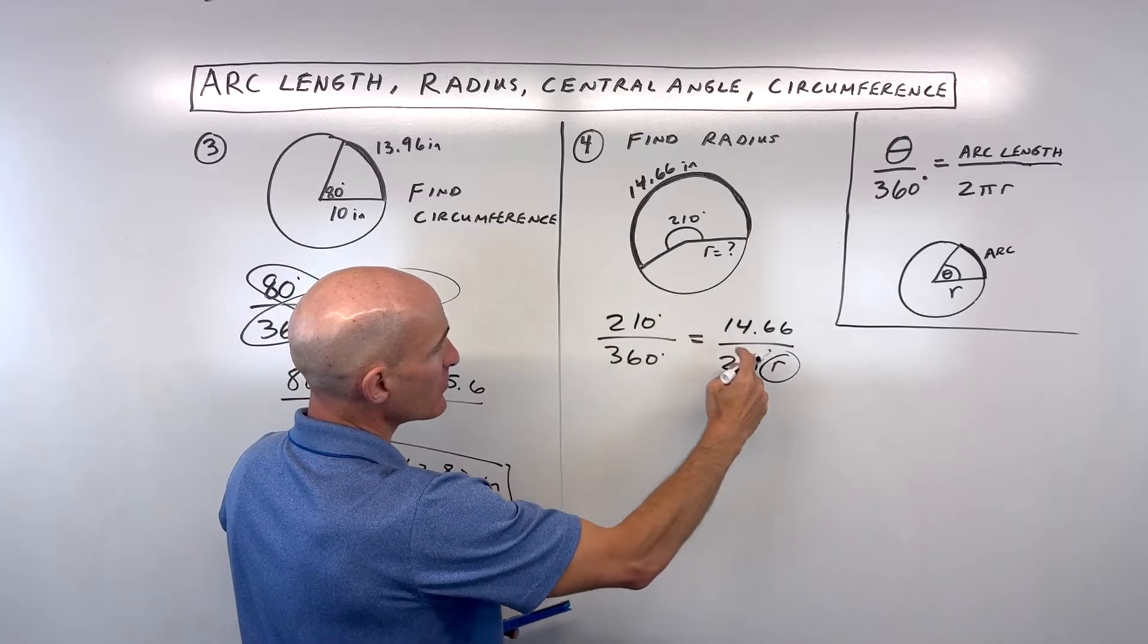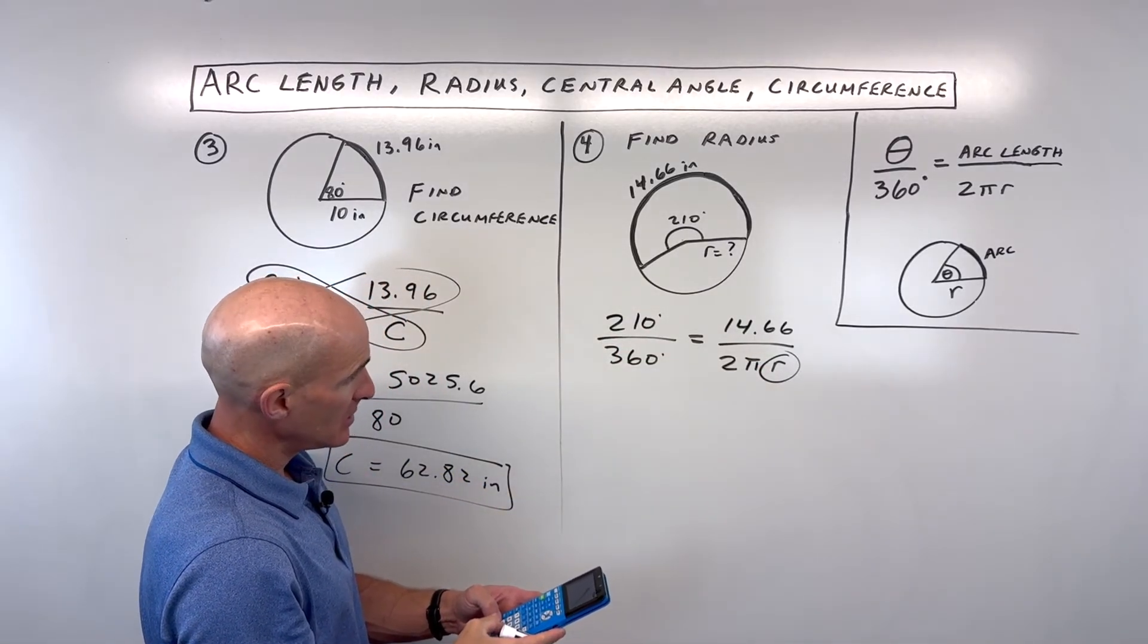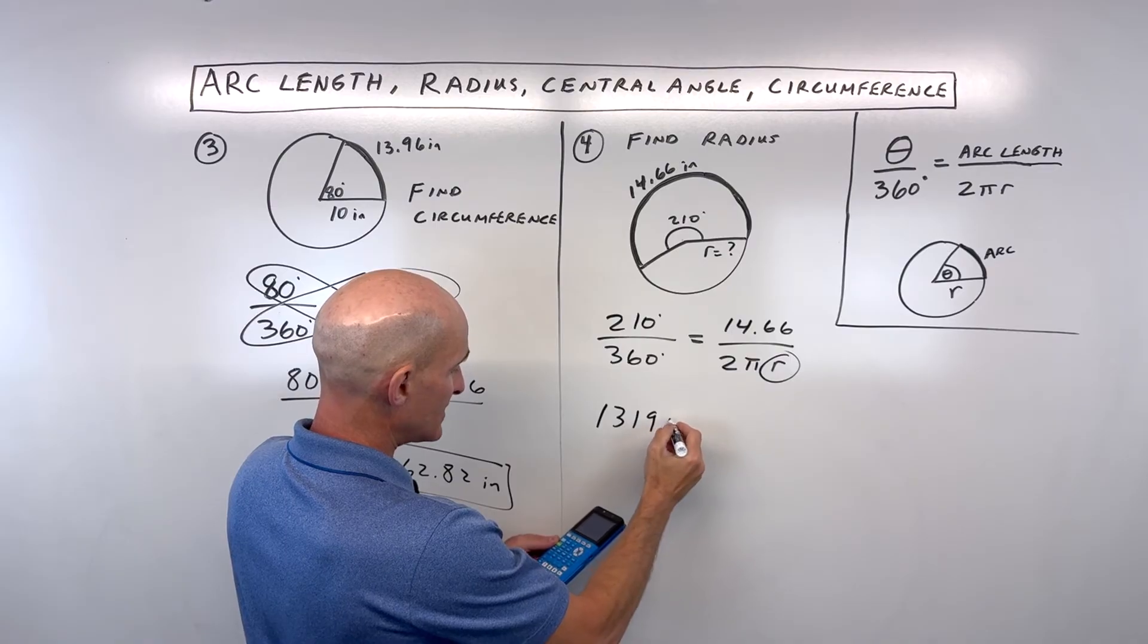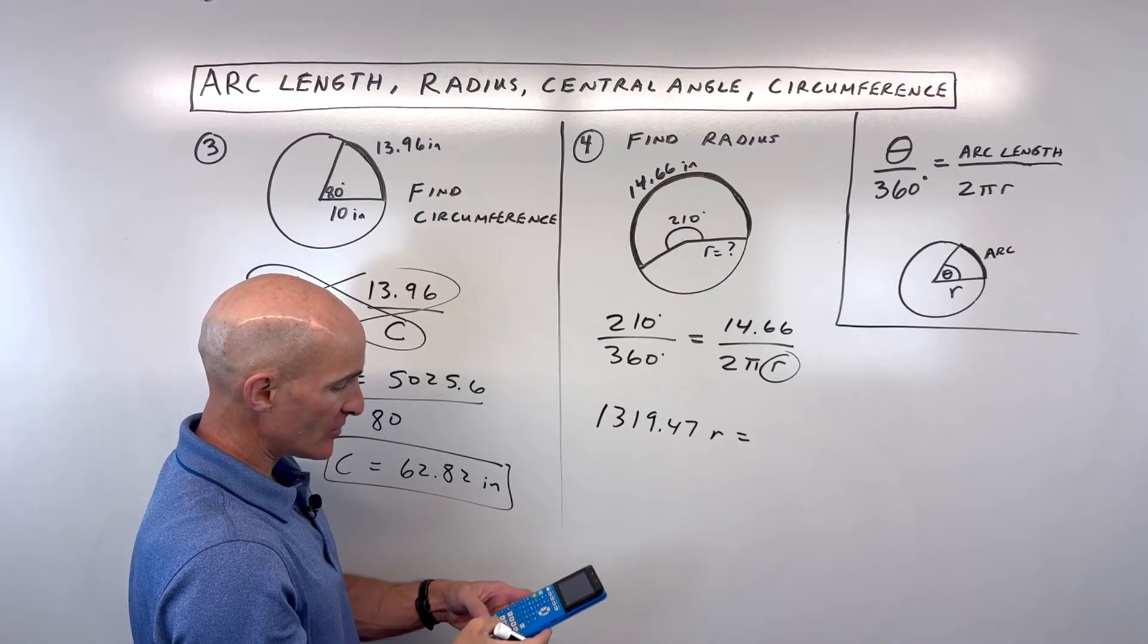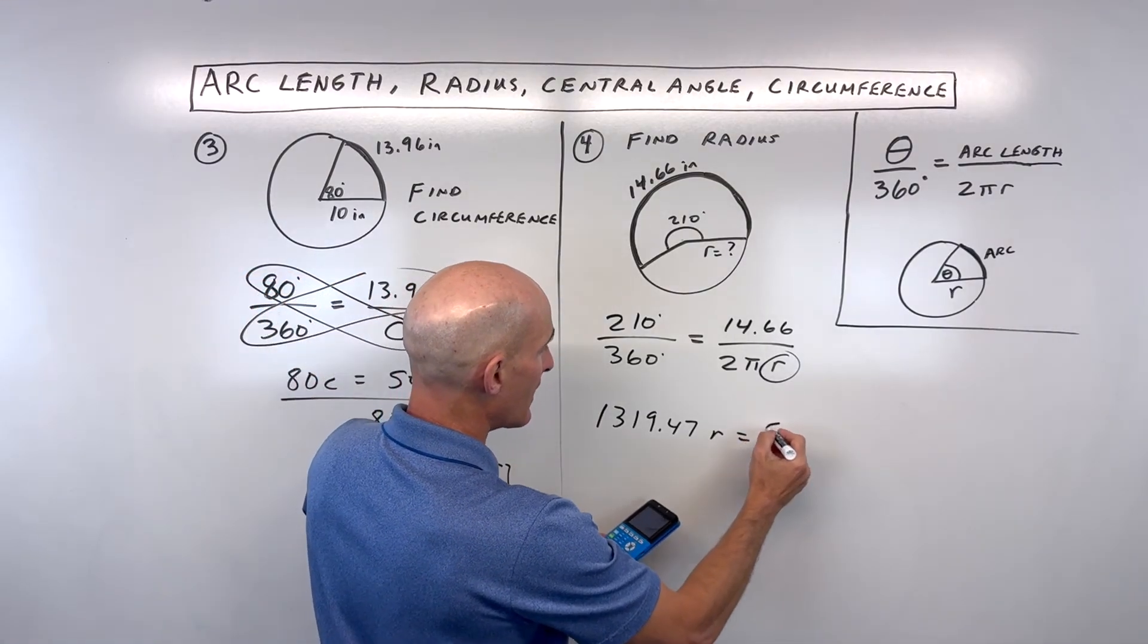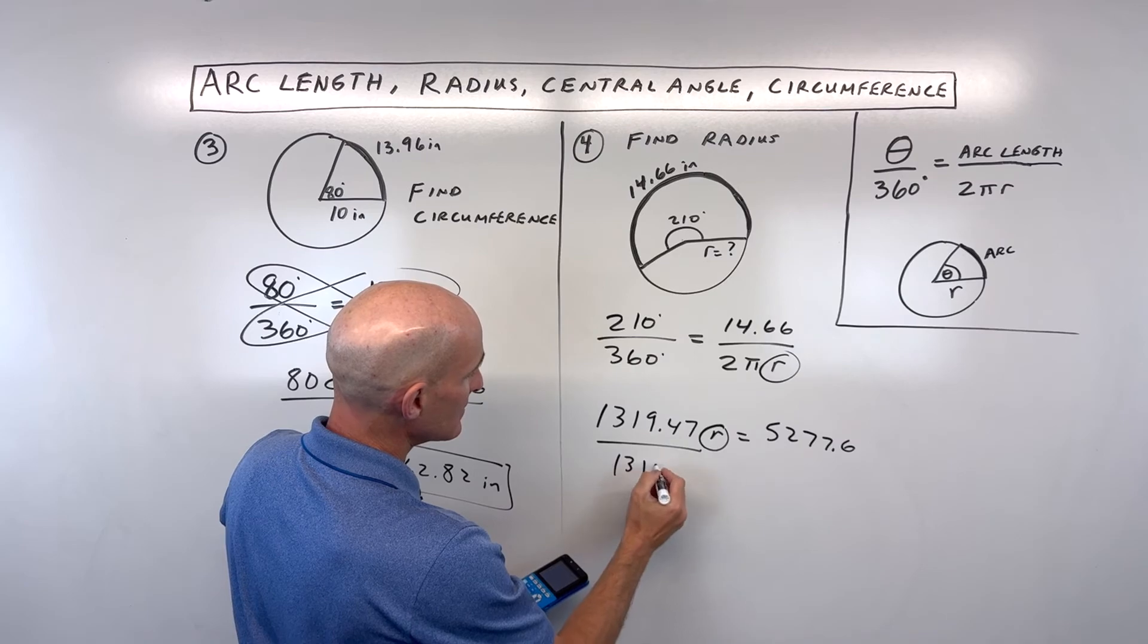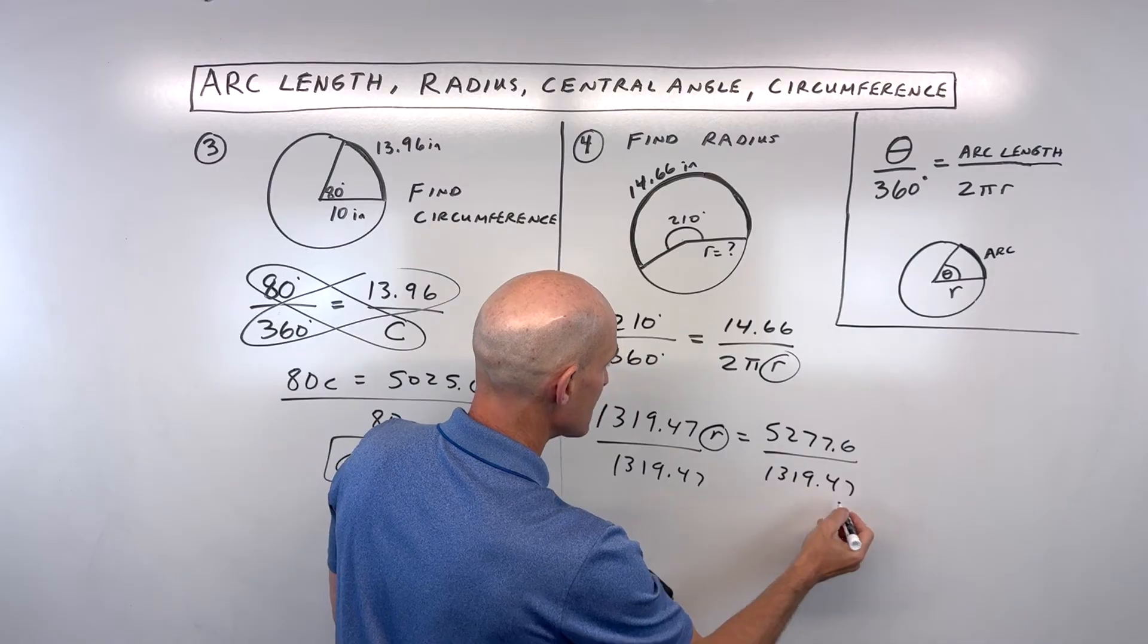So let's go ahead and do our cross product. I'm going to do 210 times 2π, which I'm going to round a little bit here. So this is 1,319.47r equals this diagonal, multiply together, 360 times 14.66, which is 5,277.6. We want to solve for r. So we're going to divide both sides by 1,319.47.